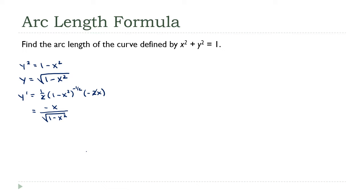You can see here how we're going to get into trouble. To use this method, we would have to find the entire length of that upper section, which means integrating from x equals negative 1 to x equals 1, and we can't do that because that derivative isn't defined at plus or minus 1, and it can't be continuous at a point it isn't even defined at.